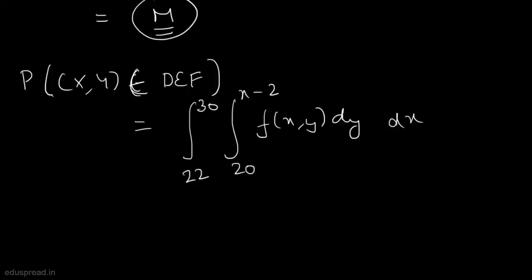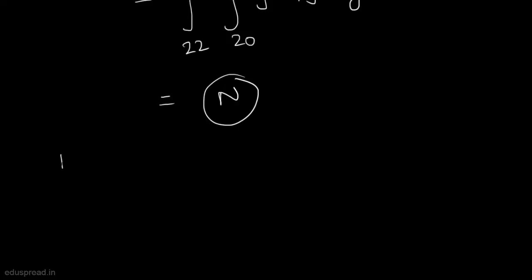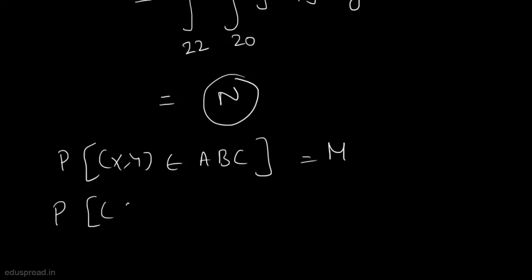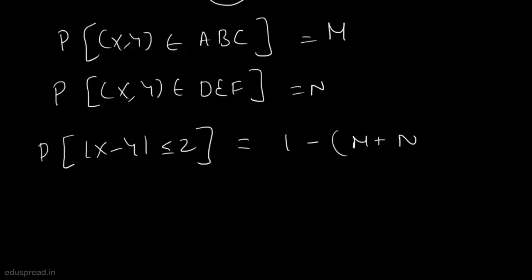Now, the desired probability P(|X − Y| ≤ 2) equals 1 − (M + N). After solving these integrals, the final answer is 0.3593. So the probability that the difference between x and y is at most 2 PSI is 0.3593.